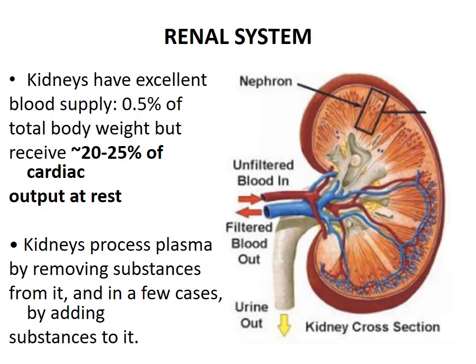The kidney plays an important role in maintaining the constancy of extracellular fluid volume, thereby maintaining homeostasis. It has a rich blood supply — approximately 20–25% of cardiac output goes to the kidney — and it removes substances from plasma.